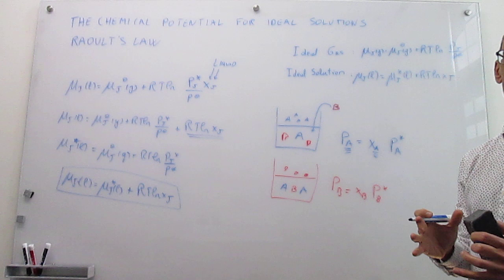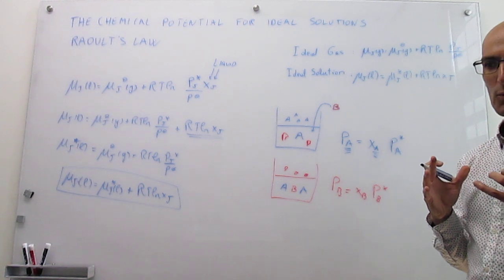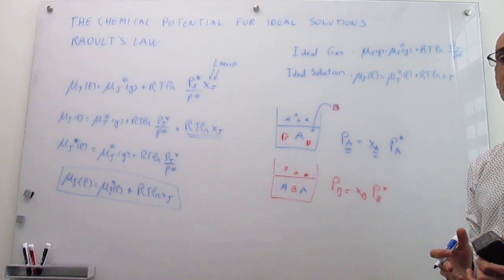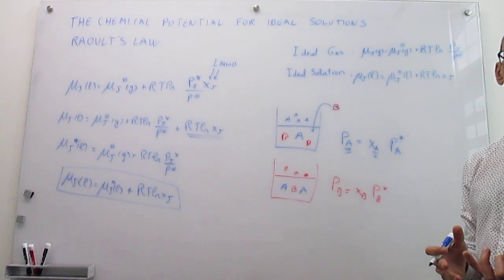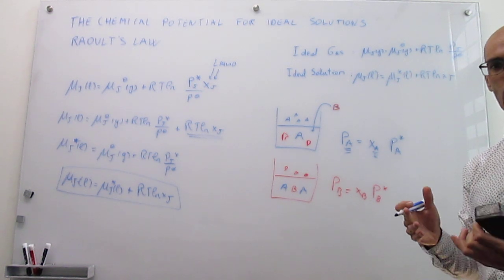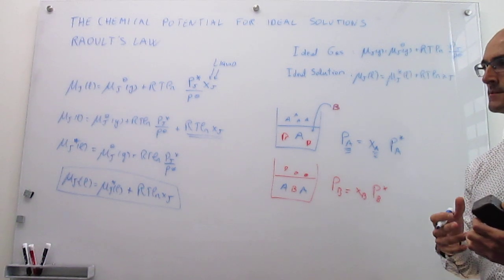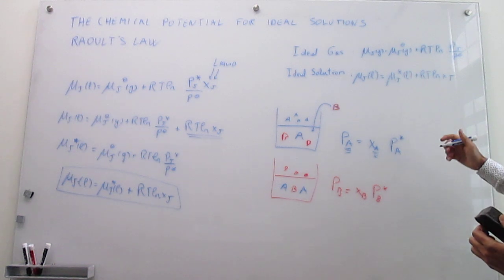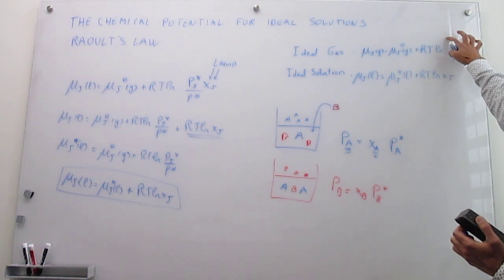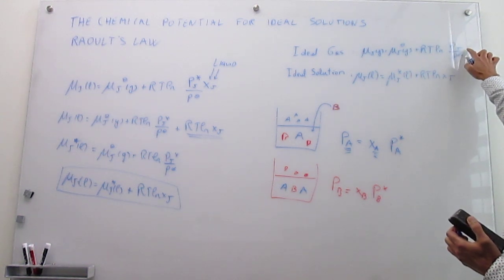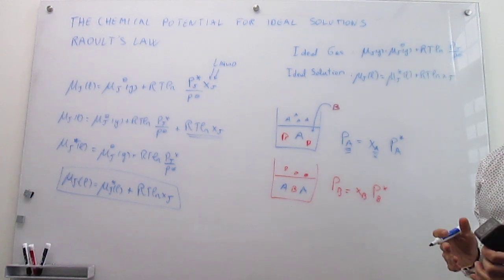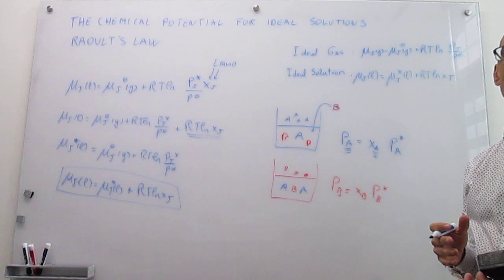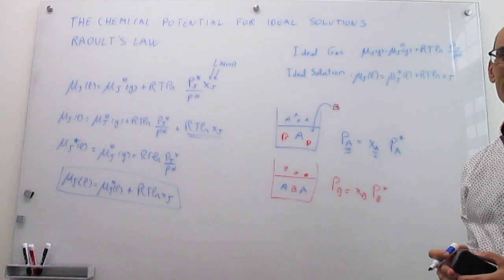To summarize: we have been able to write the chemical potential for a liquid in a mixture by analogy to the chemical potential in the gas. The step from gas to liquid was made by recognizing that Raoult's law allows you to establish a relationship between the partial pressure of the gas and the mole fraction of the liquid.